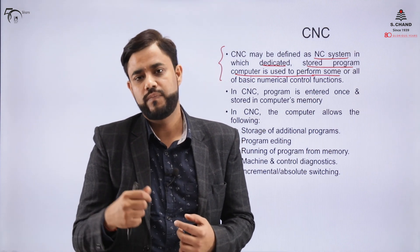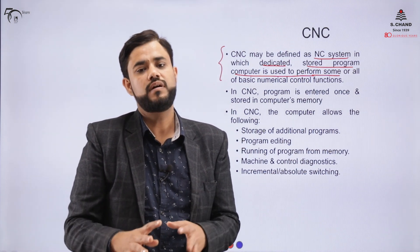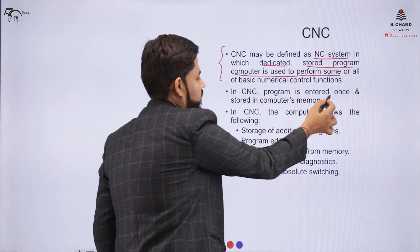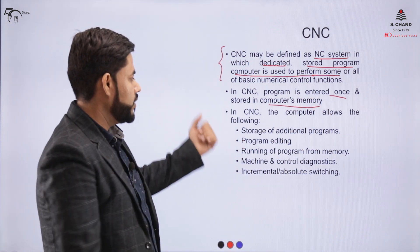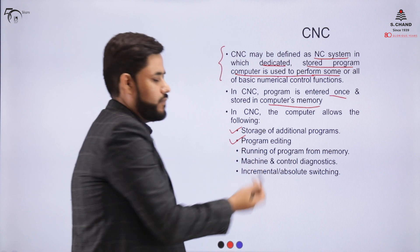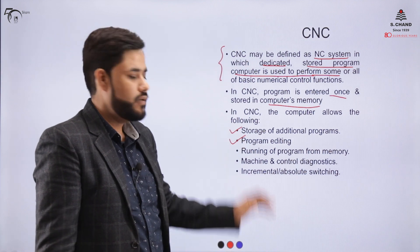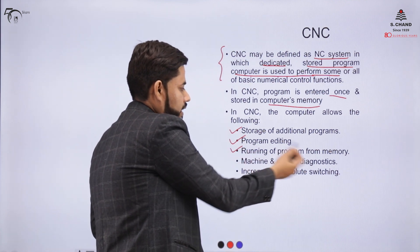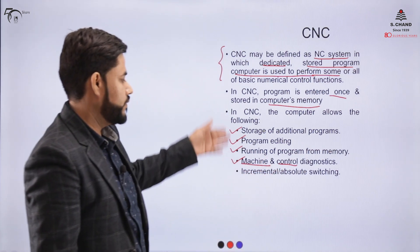The computer reads and interprets the program for tool movement. The program is entered once and stored in computer memory, where all programs can be stored. The program can also be edited — unlike the NC system, where the program was punched into punch tapes and editing was not possible. Additionally, diagnostics for any malfunctioning can be performed using the computer.